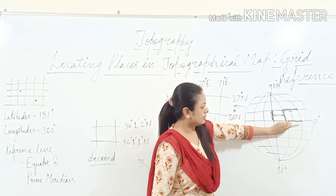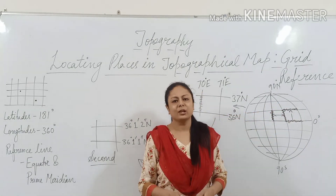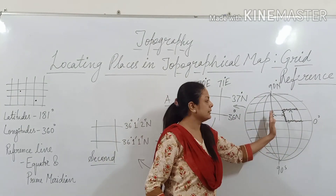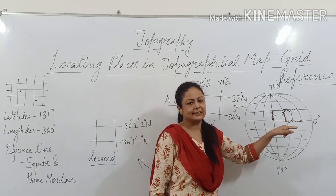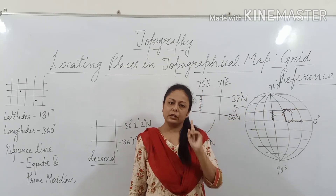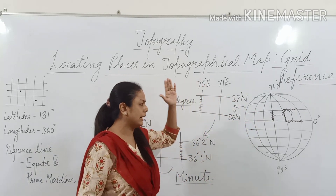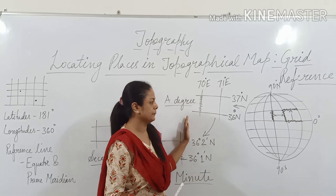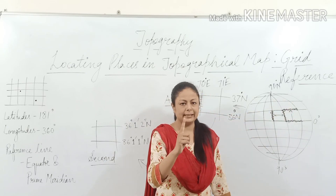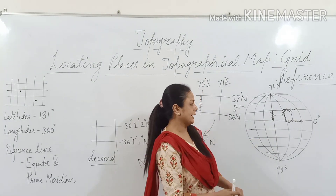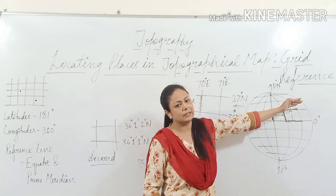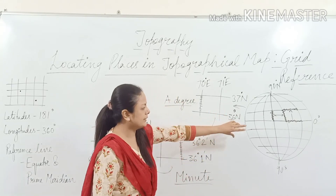Suppose this is 0 degree latitude, then the next latitude will be 1 degree. This is 0 degree longitude, the next one will be 1 degree. So as we move, this is 0 degree prime meridian and this will be 1 degree east longitude. As this is the equator at 0 degree and we are moving above, this will be 1 degree north latitude. The difference from one degree to the next is 1 degree for both latitudes and longitudes.